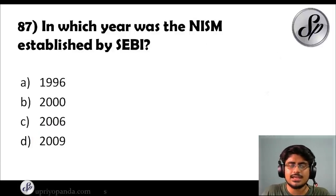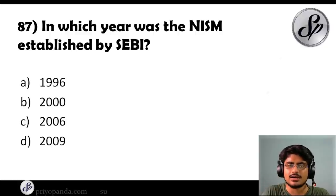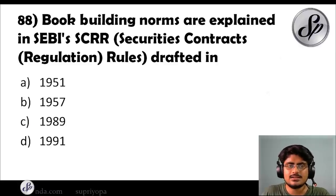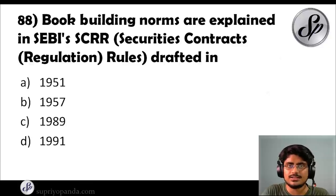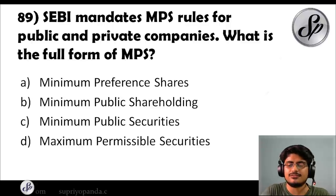Question eighty-seven: in which year was NISM established by SEBI? NISM is the National Institute of Securities Markets — it helps people get trained in the securities market. SEBI established it in 2006. Question eighty-eight: book building norms are explained in SEBI's SCRR — Securities Contracts Regulation Rules — drafted in which year? The answer is 1957. Question eighty-nine: SEBI mandates MPS rules for public and private companies. What is the full form of MPS? The full form is Minimum Public Shareholding.